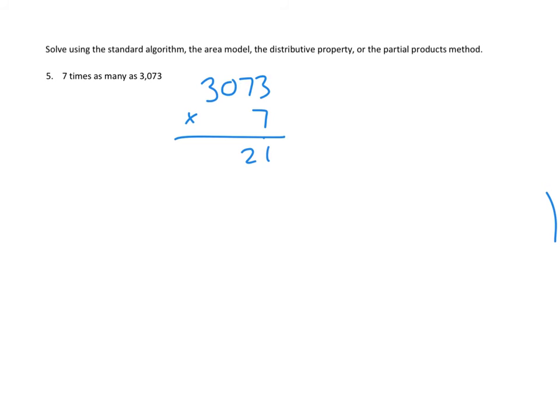Seven times three ones is 21 ones. Then seven times seven tens, that'll be 49 tens. So far, so good.